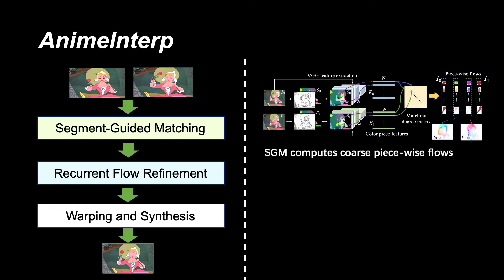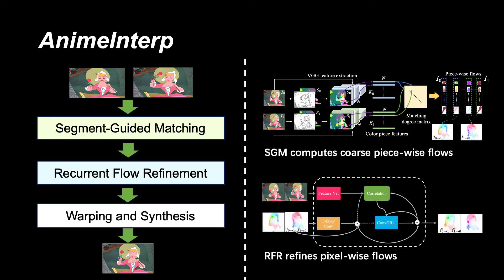We also propose an animation-specific architecture, which contains three steps to generate high-quality intermediate frames. Specifically, the segment-guided matching module computes the piecewise motion between two input frames, and the recurrent flow refinement module refines it to more precise pixel-wise flows.